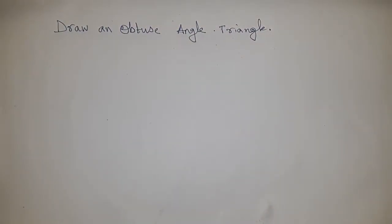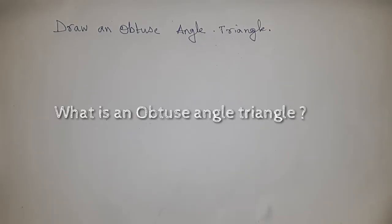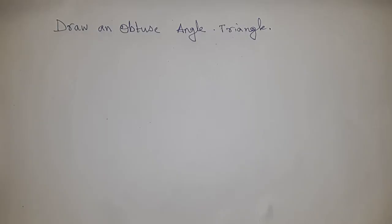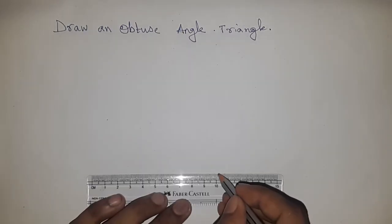So, what is an obtuse angle triangle? A triangle whose at least one angle is greater than 90 degrees is called an obtuse angle triangle. Now let's construct one.